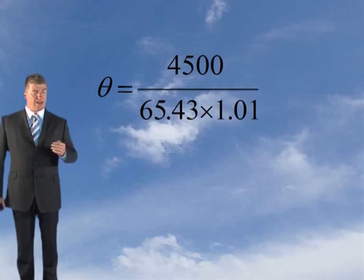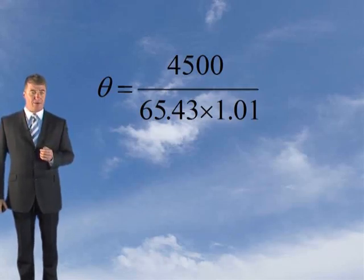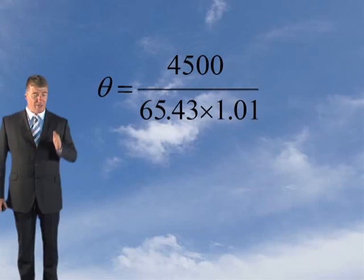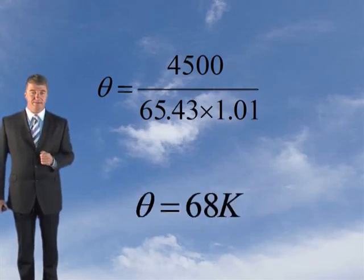Putting in the known variables: theta equals 4,500 divided by 65.43 times 1.01, which gives a theta value of 68 degrees Kelvin. So that's the temperature increase.